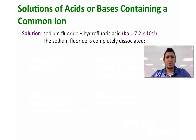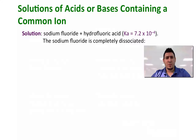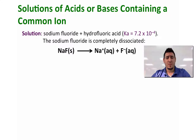Now consider a solution that is made from hydrofluoric acid and we add to it sodium fluoride. The Ka of the hydrofluoric acid is equal to 7.2 times 10 to the power minus 4. Now remember that hydrofluoric acid is a weak acid. Sodium fluoride, because it contains sodium, is very well soluble in water and will completely dissociate in water, giving the sodium ion plus the fluoride.